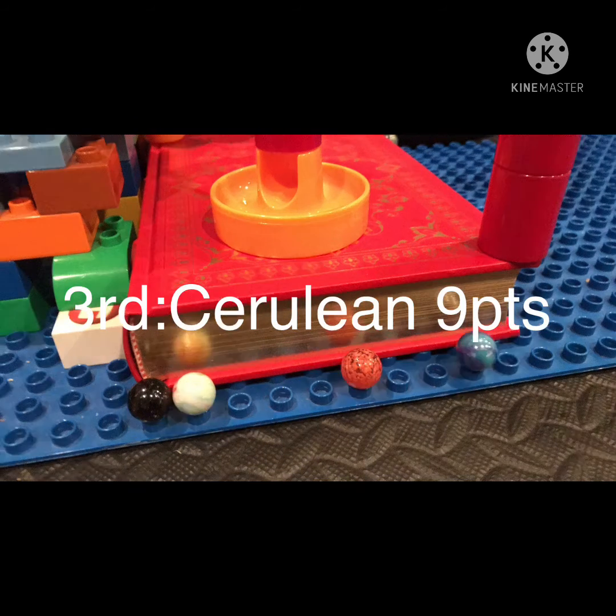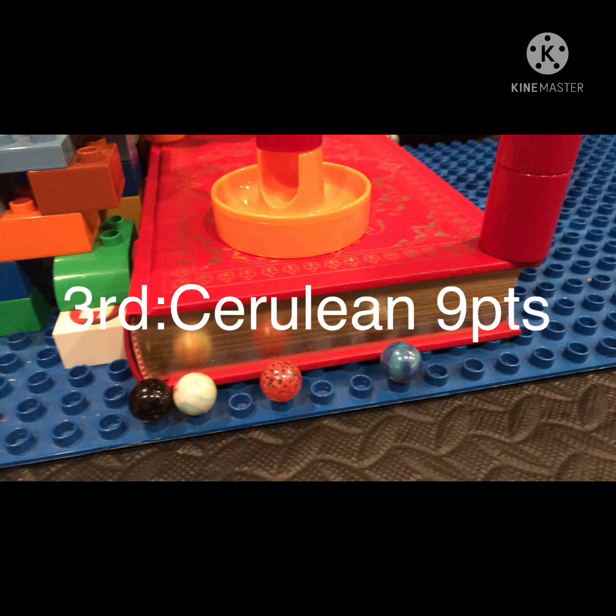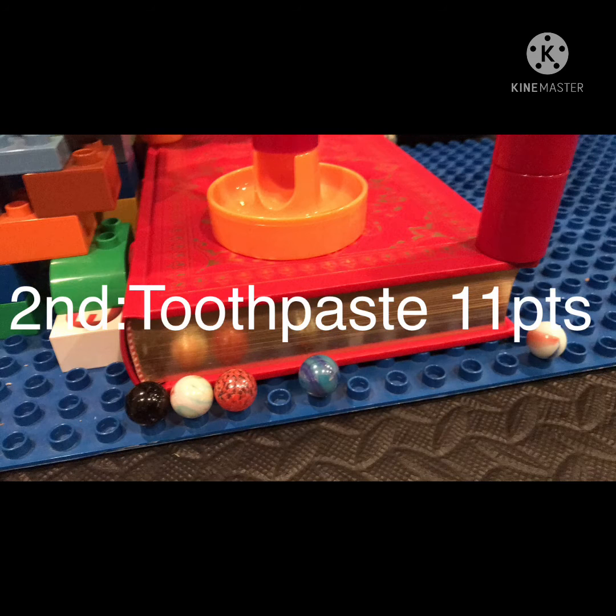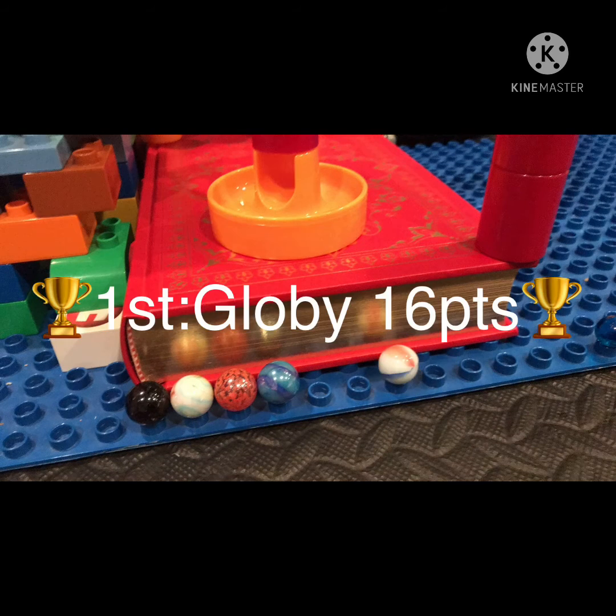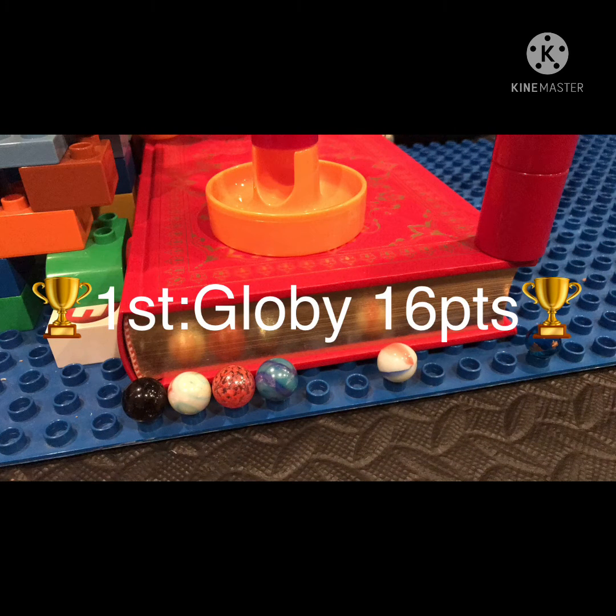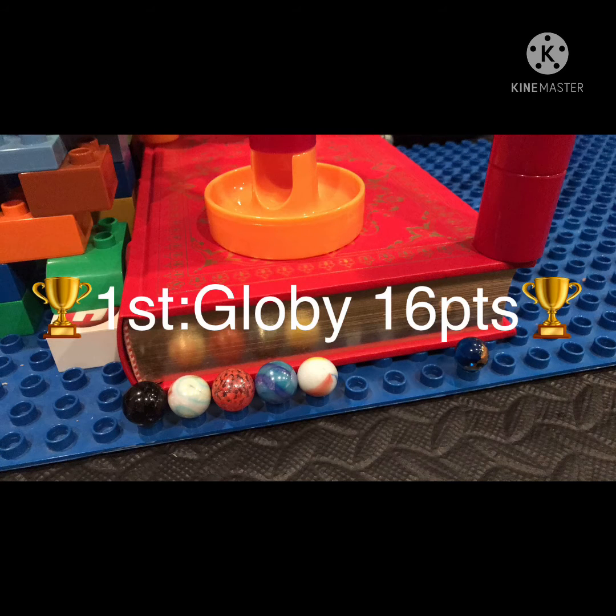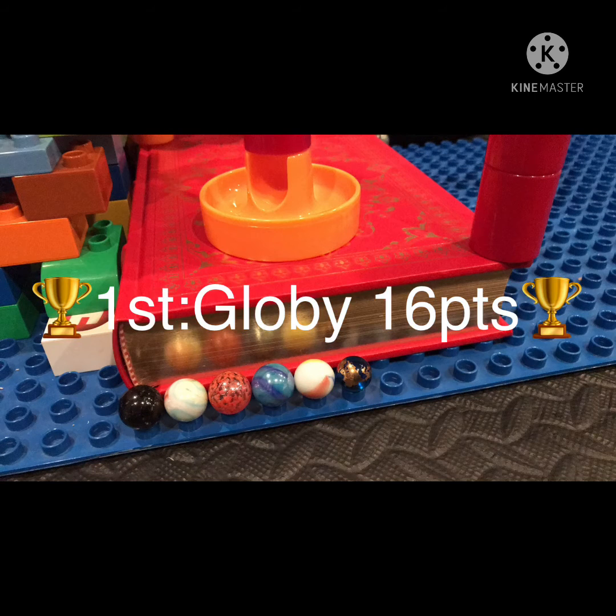Then we have third place going to Cerulean with nine points after not qualifying last season. And then second is Toothpaste with 11 points after being the defending champion last year. But our champion this time is Globy, the newcomer, that small size really helped him. So long, everyone. Hope you enjoyed this season.